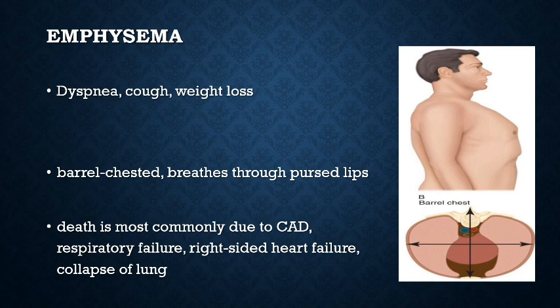Symptoms do not appear until at least one-third of the functioning pulmonary parenchyma is damaged. Typically, patients are barrel-chested and breathe through pursed lips — they are called pink puffers. Death is most commonly due to coronary artery disease, respiratory failure, right-sided heart failure, or collapse of the lung parenchyma.